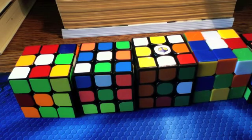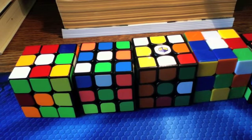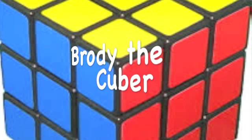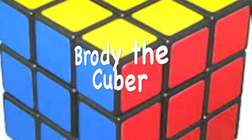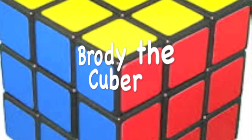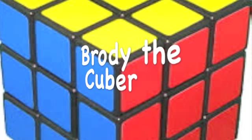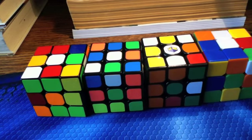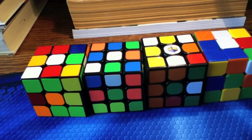Hey guys, it's Brody, and it's time for more example solves. Just like last time, I've got all five scrambles in the description, and I scrambled with white on top, green in front. I'll most likely be solving on the white side, but I might solve on yellow if white is terrible. So let's get to the first one.